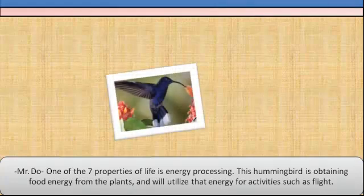One of the seven properties of life is energy processing. This hummingbird is obtaining food energy from the plants and will utilize that energy for activities such as flight.